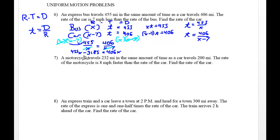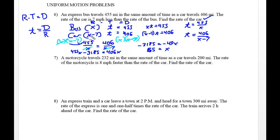We have 455x minus 3185 equals 406x. Moving the 455x over via subtraction leaves negative 3185 on the left and negative 49x on the right. Dividing both sides by negative 49, x equals 65 — that's the rate of the bus. Since the problem asks for the rate of the car, we do 65 minus 7, so the car is 58 mph and the bus was 65 mph.